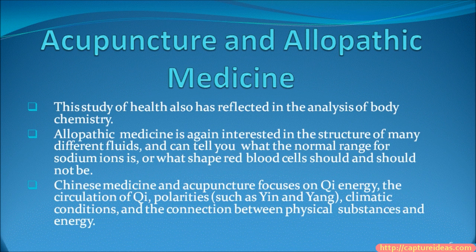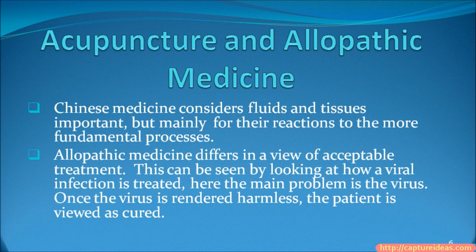This study of health is also reflected in the analysis of body chemistry. Allopathic medicine is interested in the structure of many different fluids and can tell you what the normal range of sodium ion is, or what shape red blood cells should or should not be. Chinese medicine and acupuncture focus on QI energy, the circulation of QI, polarities such as Yin and Yang, climatic conditions, and the connection between physical substances and energy. Chinese medicine considers fluids and tissues important, but mainly for their reactions to more fundamental processes.